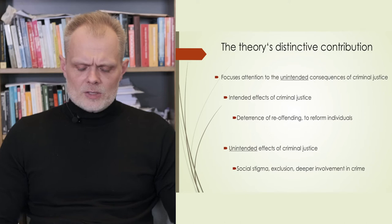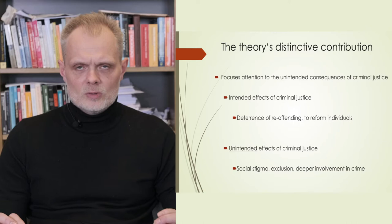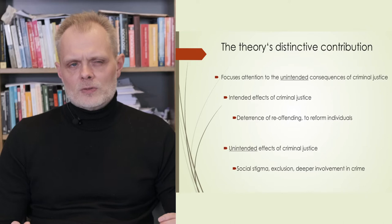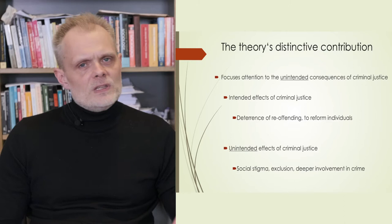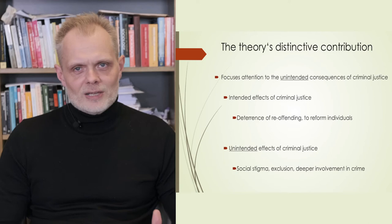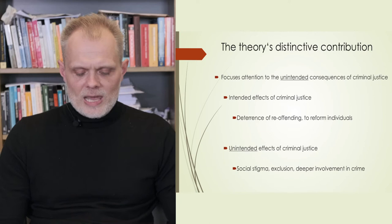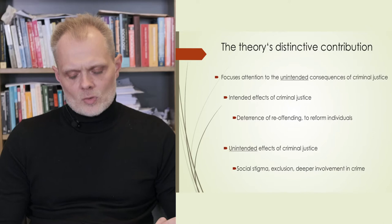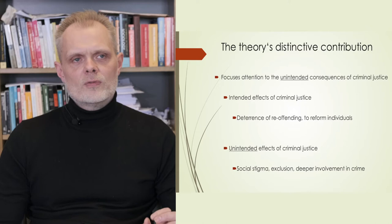In this vein, criminal justice intervention is meant to deter offenders from re-offending. This view is based on a simple individualistic view of people as rational calculators who just seek pleasure and avoid pain. Labeling theory rejects this assumption and says no, individuals are social beings. Their behavior is always a function of the social context that they find in their lives.